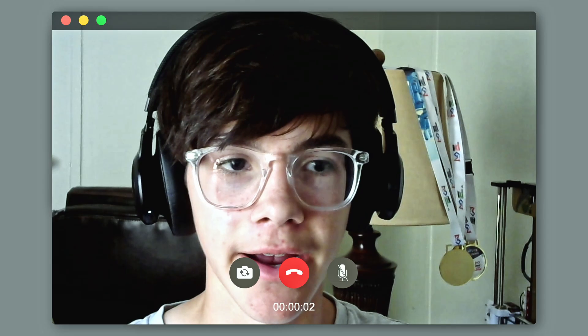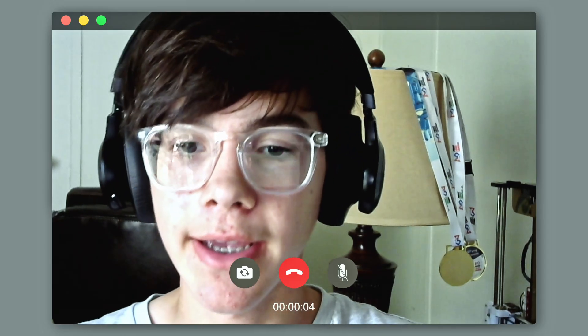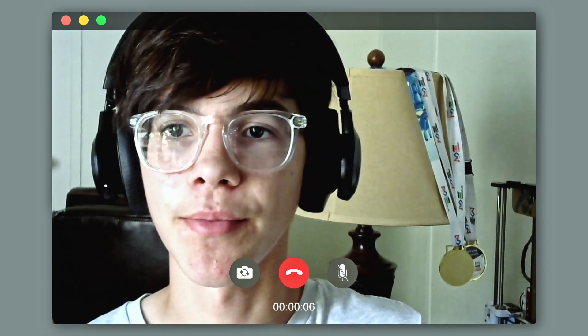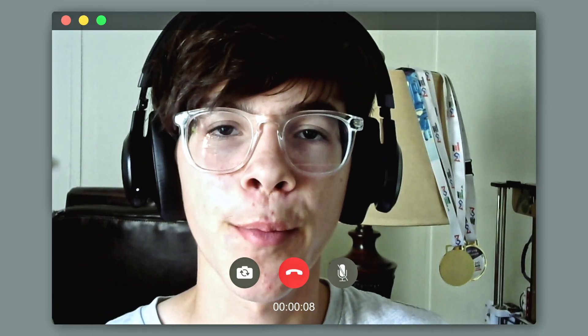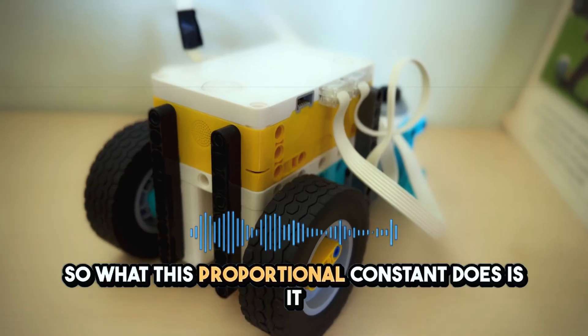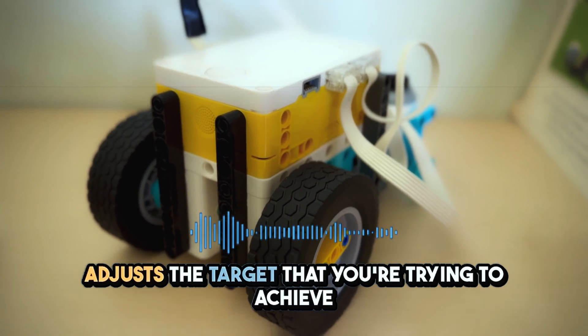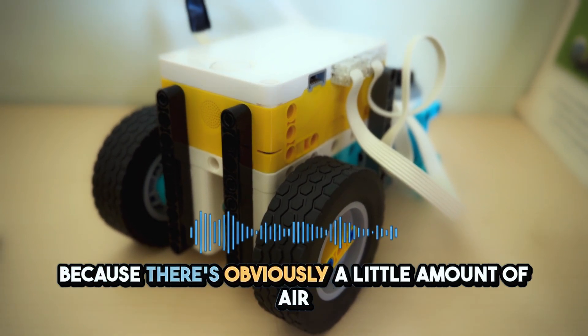Let's stop the video right there. So something I noticed that I should have gone into more depth was the proportional constant. What this proportional constant does is it adjusts the target that you're trying to achieve because there's obviously a little amount of error in your robot.